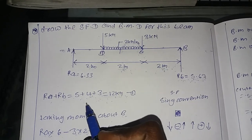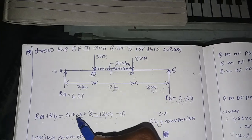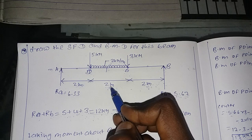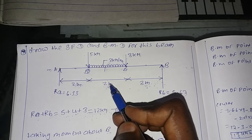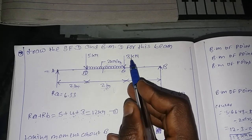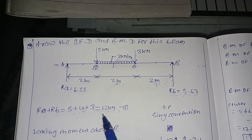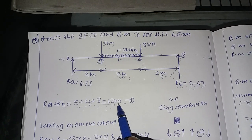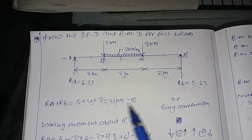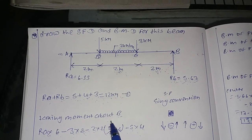The first step is to calculate reaction loads. RA plus RB equals 5 kN plus UDL load: 2 into 2 equals 4, plus point load 3 kN, giving a total of 12 kN. So the reaction loads equation is RA plus RB equals 12 kN — this is Equation 1.